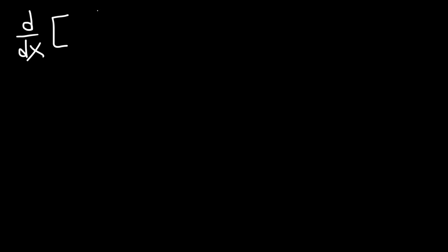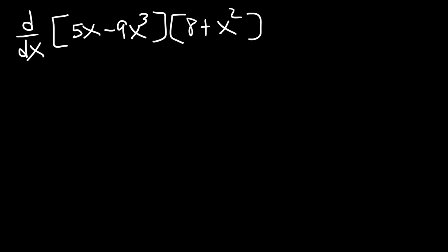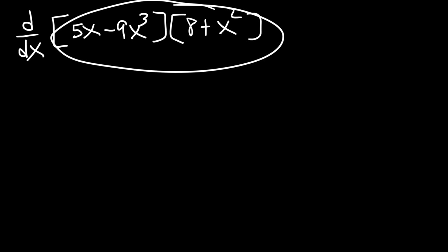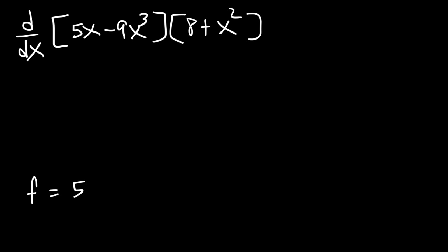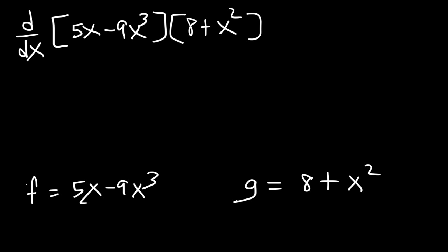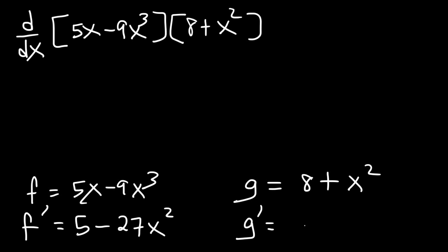Now let's try another example. Go ahead and differentiate this expression: 5x minus 9x cubed times 8 plus x squared. So let's say that f of x is 5x minus 9x cubed and g is going to be 8 plus x squared. First we need to find f prime: the derivative of 5x is 5, and the derivative of 9x cubed is 9 times 3x squared which is 27x squared. Now for g prime, the derivative of x squared is 2x according to the power rule.